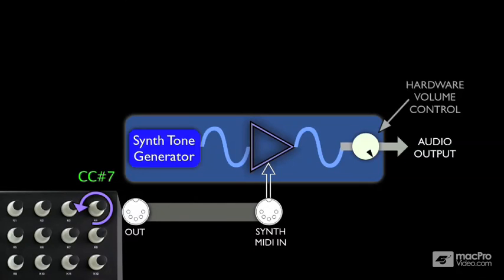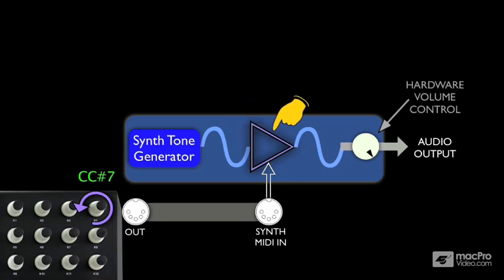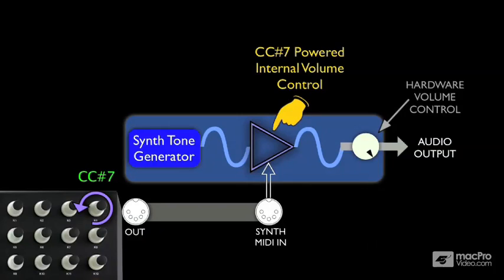What we're looking at here is a simplified view of the inner workings of a synthesizer. Here we see its internal sound generator generating a waveform, and that flows into this triangle, which I'm using to represent the internal volume control that we're going to adjust with CC7 messages.